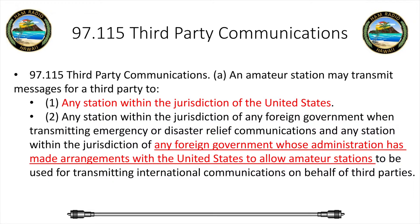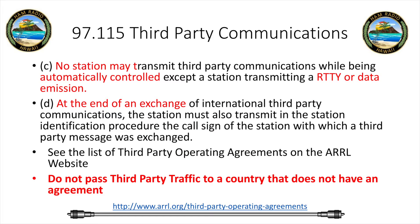An amateur station may transmit messages to any station within the jurisdiction of the United States, any station within the jurisdiction of a foreign government when transmitting emergency or disaster relief communications, and any station within the jurisdiction of a foreign government whose administration has made arrangements with the United States to allow amateur stations. There's a list of agreements on the ARRL website. No stations may transmit third-party communication while automatically controlled, except stations transmitting RTTY or data. At the end, you have to identify the third-party message and who it was exchanged with — normal operating procedures.